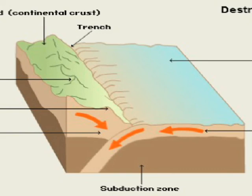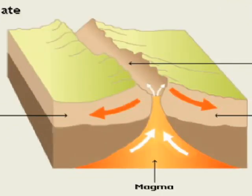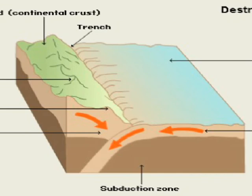What's the difference between all of those? Well, there are two types of plate: oceanic and continental. The oceanic is dense and heavy and the continental is lighter and less dense. At a destructive boundary, continental and oceanic plates collide. The oceanic is forced under the continental and is destroyed. This causes the pressure to release and causes an earthquake, and can also create a volcano.